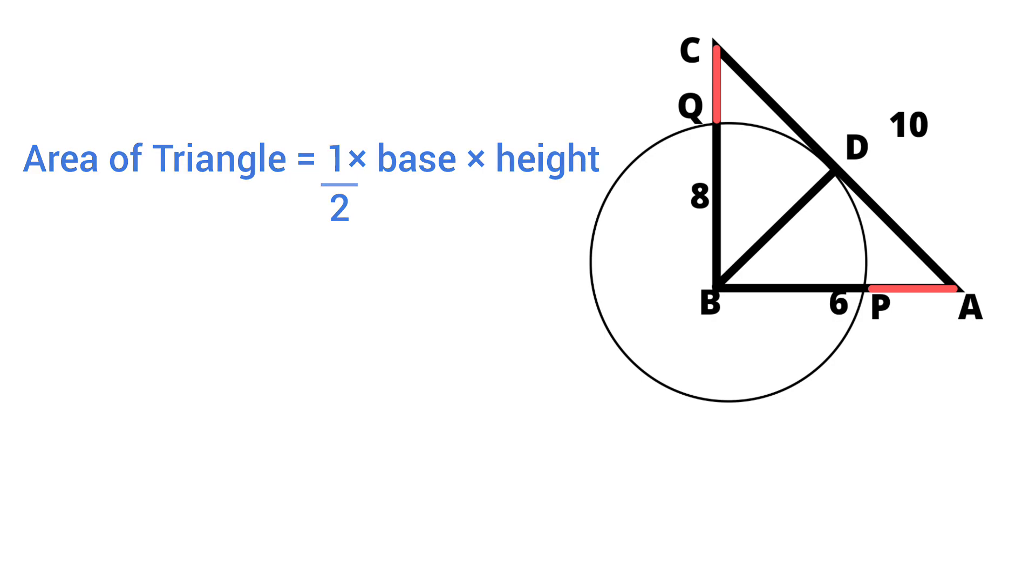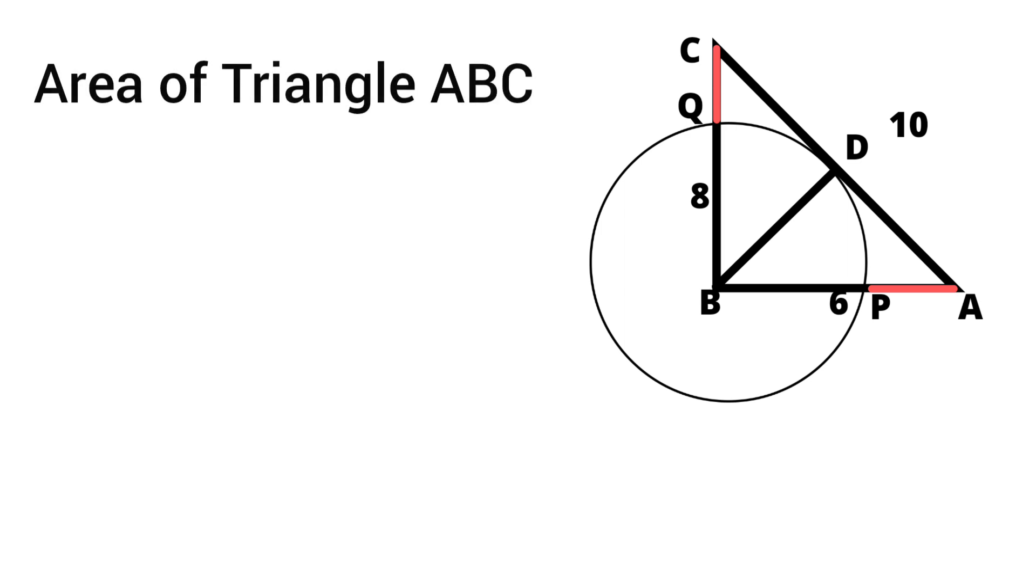In the first way, let's consider base as AB and height as BC. So half into base AB into height BC. In the second way, let's consider base as AC and height as BD.